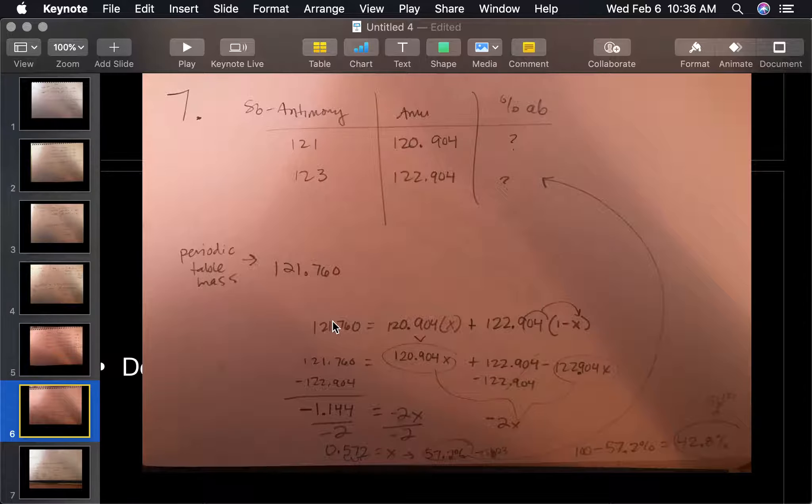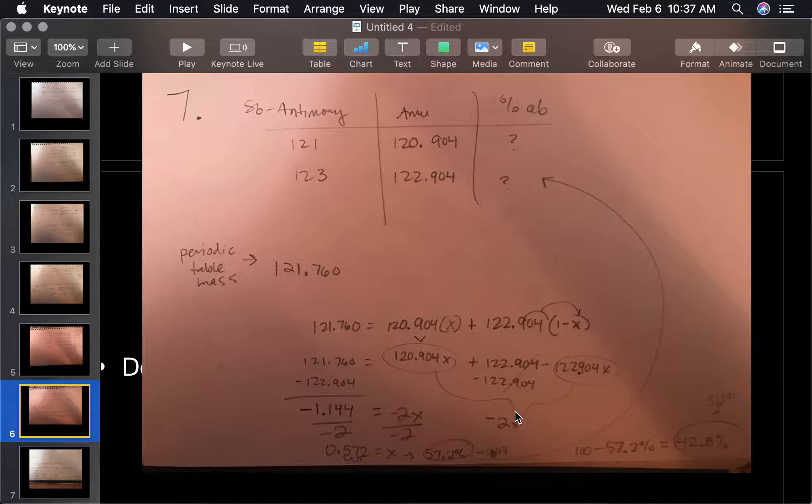I put this atomic periodic table mass here is equal to this one times some sort of figure plus this one. Now this is where the formula comes in. You have to put a 1 minus x here because this is an algebraic equation. If we have two unknowns here, the way we figure that out is the 1 minus x. When I do that, this gets brought down, this becomes 120.904x. Now you distribute this, so 122.904 times 1 is this, and then this times negative 1 becomes negative 122.904x. Now I have this little equation here. To get rid of this I subtract it on this side, subtract it on this side, cancels out here, and I get negative 1.144.